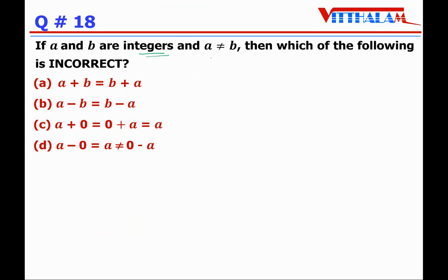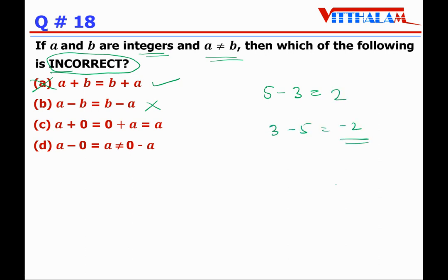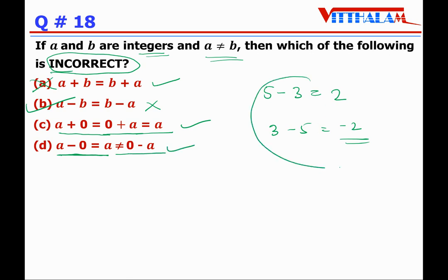Question 18: If a and b are integers and a does not equal b, which of the following is incorrect? Option A: a plus b equals b plus a — correct by commutativity. Option B: a minus b equals b minus a — incorrect, e.g., 5 minus 3 equals 2, but 3 minus 5 equals minus 2. So B is the answer, no need to check C and D. Confirmed: answer is B.